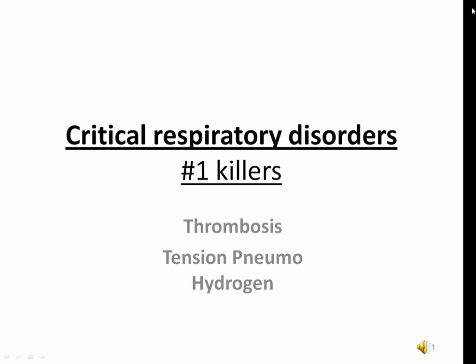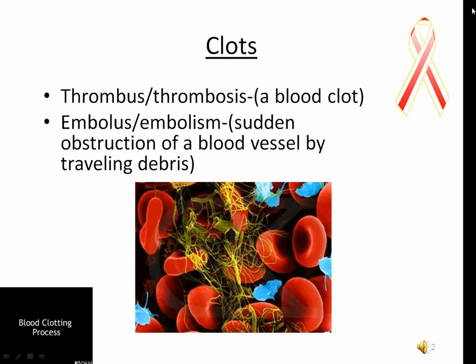A thrombus is a stationary blood clot; thrombosis is the forming of the clot. These two words are used interchangeably to describe blood clots that form and cling to the inner walls of blood vessels. An embolism is the formation of a chunk of debris that travels from one place and takes up residence inside a blood vessel — that chunk is almost always a blood clot. An embolus is the debris already sitting in the vessel. The classic example is clots forming in the deep veins of the calves traveling into the tiny capillaries of the lungs — a pulmonary embolism.